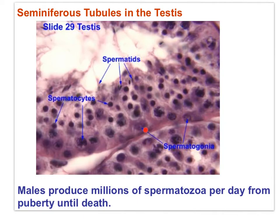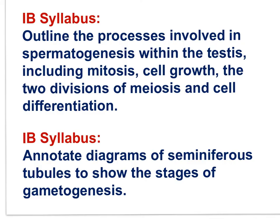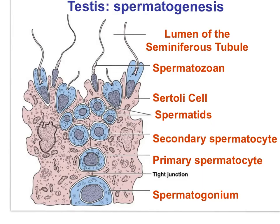In this micrograph, we can see diploid spermatogonia, spermatocytes in various stages of meiosis, and haploid spermatids that must differentiate — cell differentiation — into mature spermatozoa. Keep in mind the IB syllabus: outline the processes involved in spermatogenesis within the testes, including mitosis, cell growth, the two divisions of meiosis, and cell differentiation; and annotate diagrams of seminiferous tubules to show the stages of gametogenesis. This is an important slide: the outer edge of the seminiferous tubule versus the lumen.